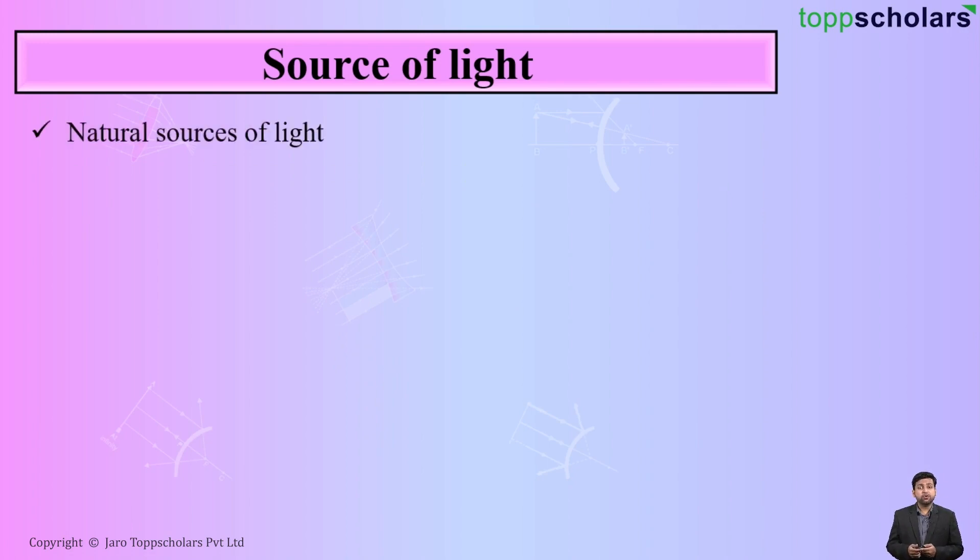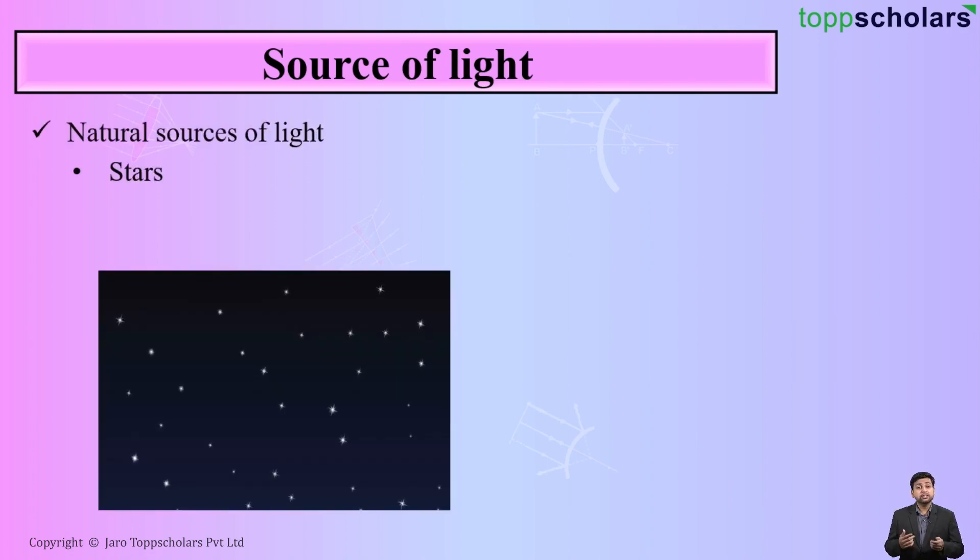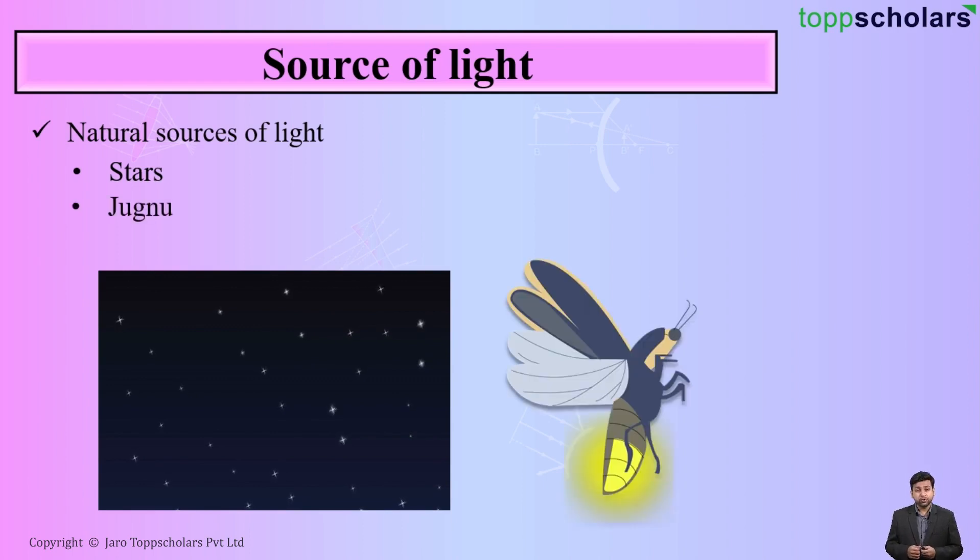The other examples for natural sources of light is stars. Have you seen the twinkles of the stars in the night? Exactly, that is also a natural source of light. One more example is Jugnu. Have you seen an insect which glows in the night? Exactly, that is Jugnu. So these are natural sources of light.